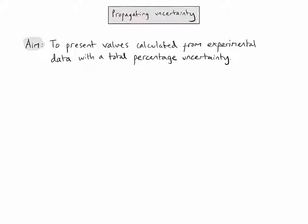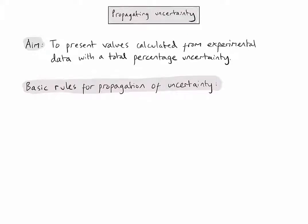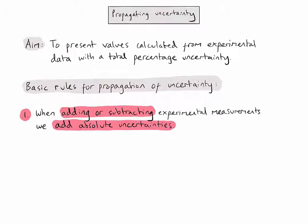To follow through calculations and propagate the uncertainty, there are three basic rules we need to follow. The first rule is that when adding or subtracting experimental measurements, we need to add together the absolute uncertainties. The second rule is that if we are multiplying or dividing experimental measurements, we must add together the percentage uncertainties.